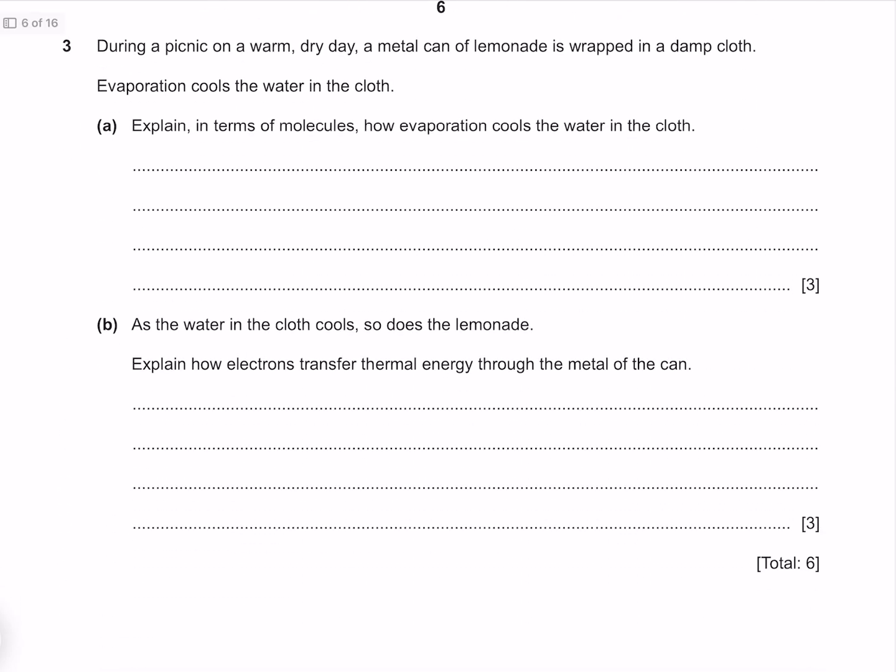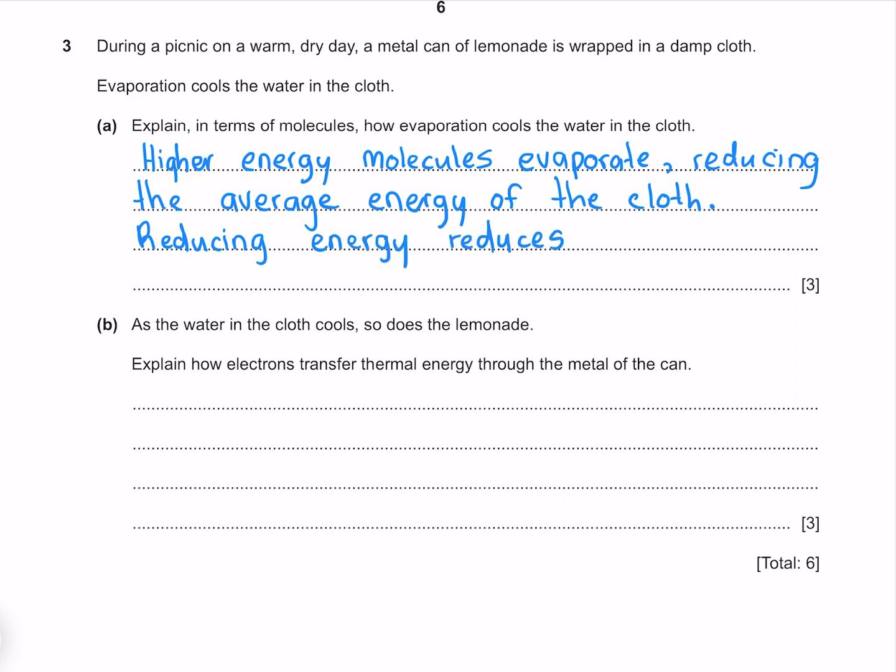During a picnic on a warm dry day a metal can of lemonade is wrapped in a damp cloth. Evaporation cools the water in the cloth. Explain in terms of molecules how evaporation cools the water in the cloth. Higher energy molecules evaporate reducing the average energy of the cloth. Reducing energy reduces temperature.